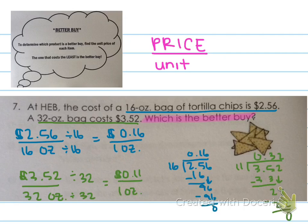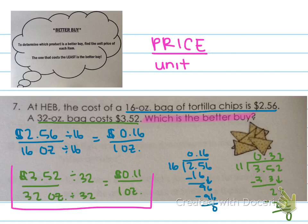Once I found the unit price, I discovered that the 16-ounce bag was $0.16 per ounce, and the 32-ounce bag was $0.11 per ounce. To figure out which is the better buy, the one that costs the least is the better buy — so the one with the smaller numerator is the better buy. That means the 32-ounce bag is the better buy.